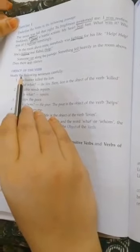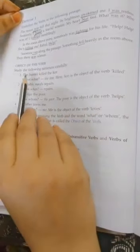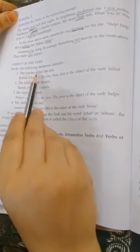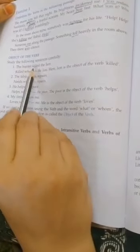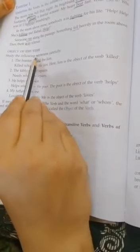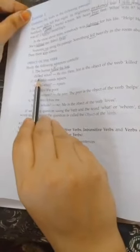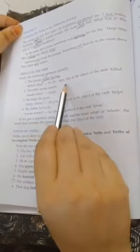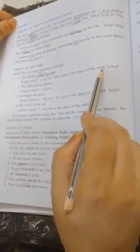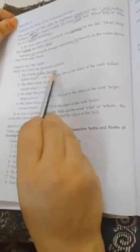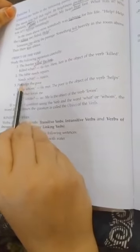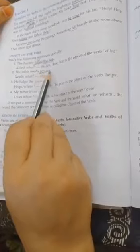Now coming to the object of the verb. Study the following sentence: 'The hunter killed the lion.' Killed what? The lion. Here 'lion' is the object of the verb. 'The table needs repair'—needs what? Repair.